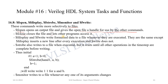$fdisplay and $fwrite write formatted data to a file whenever they are executed. They are the same except $fdisplay inserts a new line after every execution while $fwrite does not — so $fwrite writes data continuously. $fstrobe also writes to a file when executed, but it waits until all operations in the current time step are completed before writing.